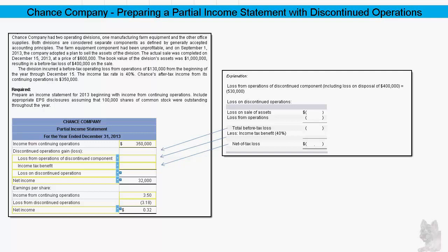Chance Company has two operating divisions: one manufacturing farm equipment and the other office supplies. Both divisions are considered separate components as defined by generally accepted accounting principles. The farm equipment component has been unprofitable, and on September 1st, 2013, the company adopted a plan to sell the assets of the division.